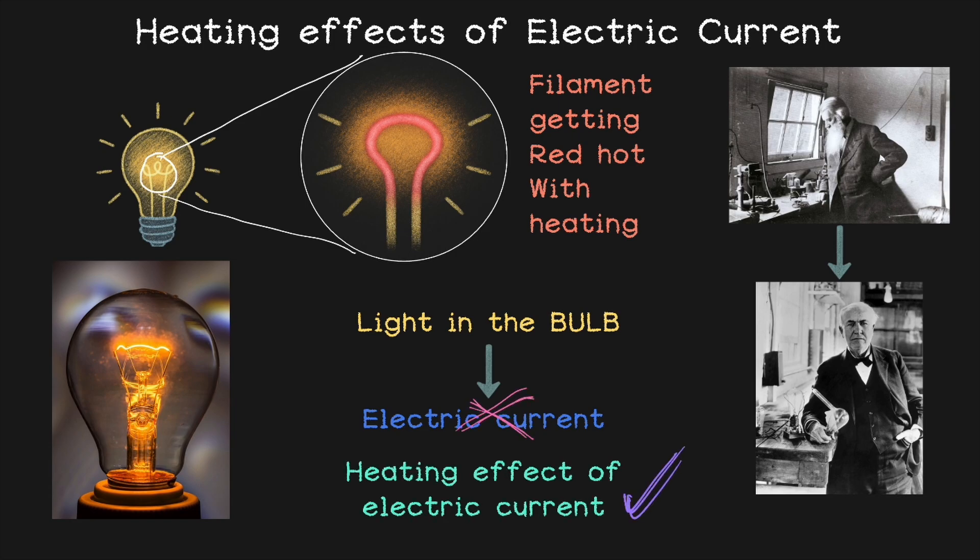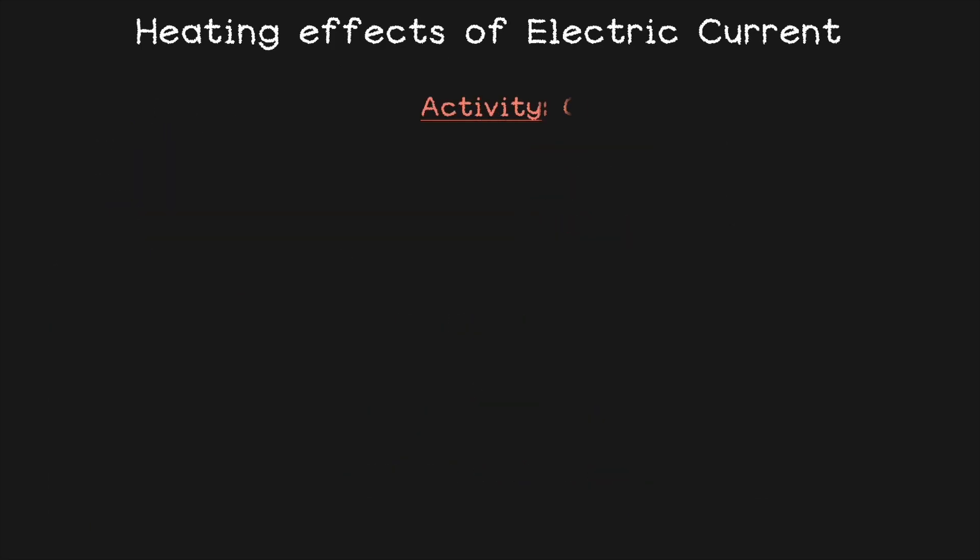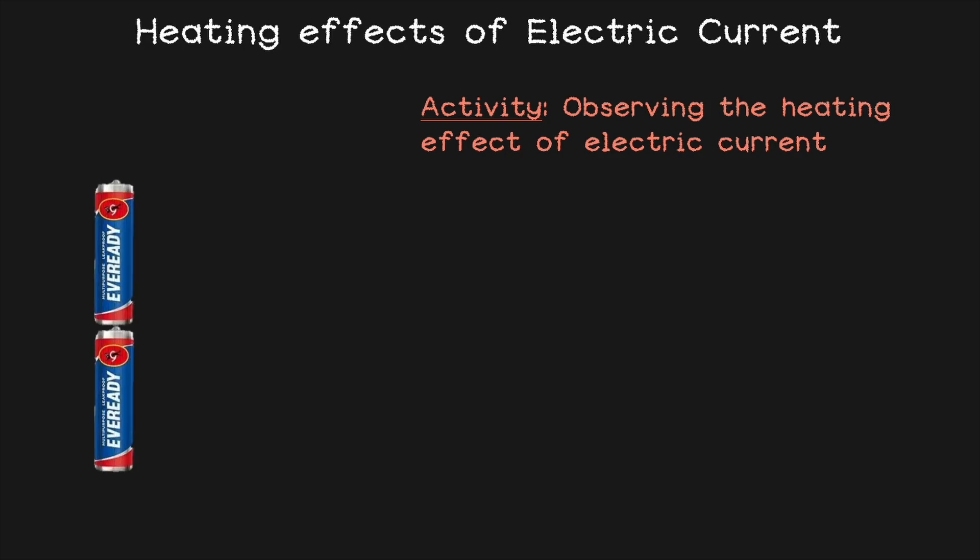Let's see it in action with a simple experiment. Let's try this activity of observing the heating effect of electric current. For this, you need to take two battery cells of 1.5 voltage. The normal cells you get from the market that you normally use in your home appliances are of 1.5 voltage. So taking two cells would make it total 3 voltage. You also need to take a switch and a small torch bulb. And now when you connect them with wires, you make a whole circuit all by your own.